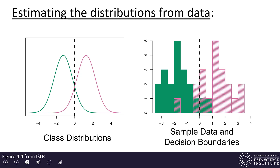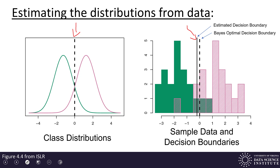Now let's talk about how we estimate these distributions from the data. We assume Gaussian or multivariate Gaussian distributions and use standard estimation methods. On the left we have two classes — green and pink — from figure 4.4 in the textbook. We take random samples from those classes, shown as histograms on the right, compute the mean and standard deviation for each, and the place where the estimated distributions cross is shown by the dark black line. The dotted line shows the Bayes optimal decision boundary, which is exactly where the true distributions cross on the left-hand side.